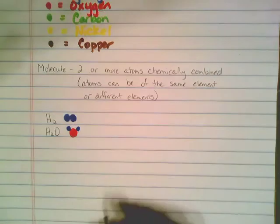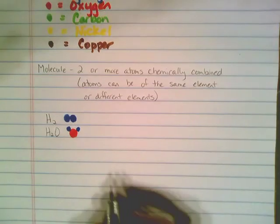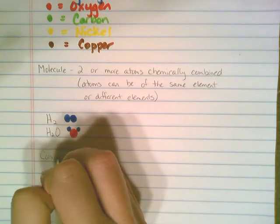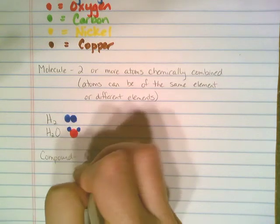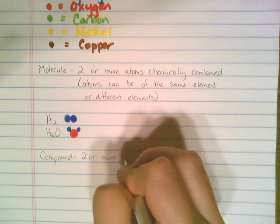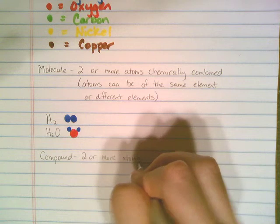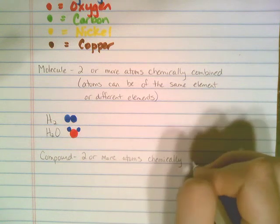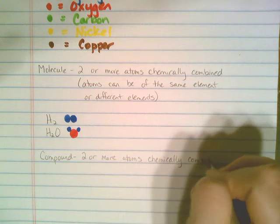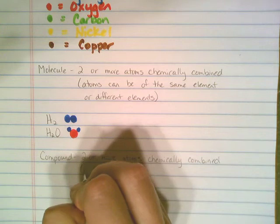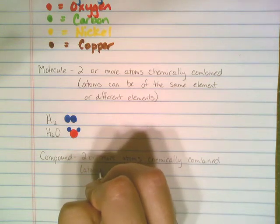The definition of a compound is very similar to that of a molecule, with one key difference. A compound is anytime you have two or more atoms chemically combined. But the key difference between a molecule and a compound is that the atoms of a compound have to be different.